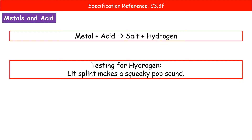The third reaction is metals and acids — they make salt and hydrogen. We bring in the hydrogen gas test: a lit splint makes a squeaky pop. Make sure you say the splint is lit and that it is a squeaky pop sound. The name of the salt: copy the metal name and look at the acid for the ending. If writing a balanced symbol equation, don't forget hydrogen is diatomic — always write H₂, never just H.